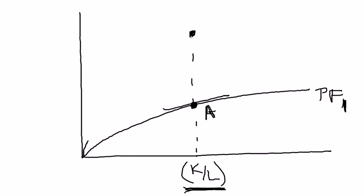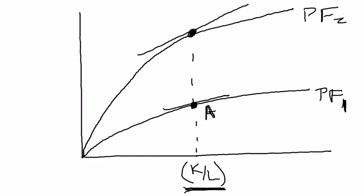So I'll draw the new production function from an improvement in technology, and it looks like this. I'll call that production function 2. Now let's draw the slope of the tangent line - that's point B.